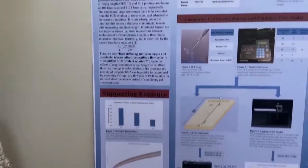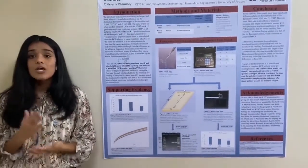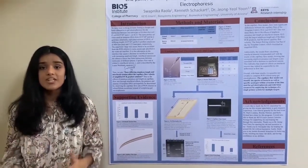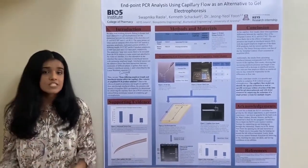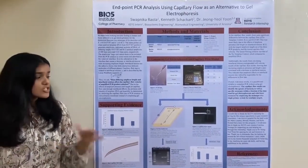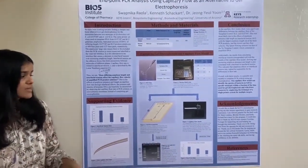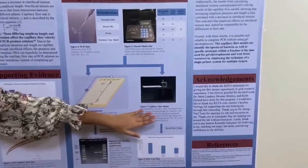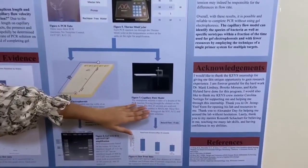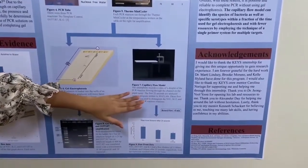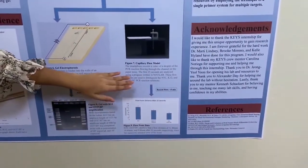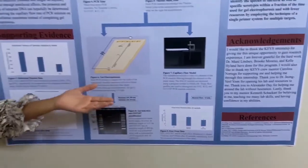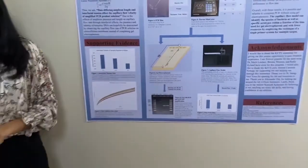Thus, if we find differences in capillary flow, we can ultimately identify the strain of bacteria within each PCR product — just through our mechanism of recording a droplet of each PCR product flowing through a piece of nitrocellulose paper and analyzing the video of its flow using a code written in MATLAB.